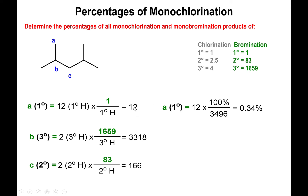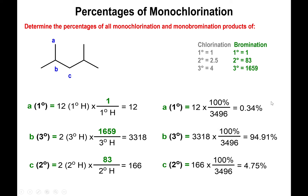Just as we did for chlorination, we divide the individual values — 12, 33.18, and 166 — by the total of 211.18, and multiply by 100. What you find out is that by far the secondary CH predominates this reaction, with 94.9% of the product. That's really good — almost entirely pure product. You have a little less than 5% of the tertiary product and less than 1% of the primary, so this should be easy to separate and get a relatively good yield on that specific product.